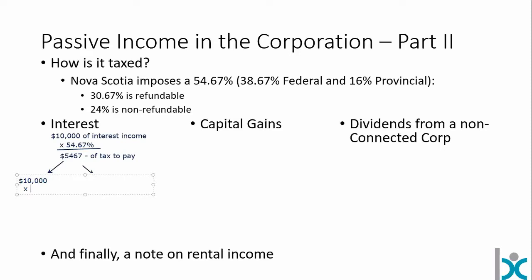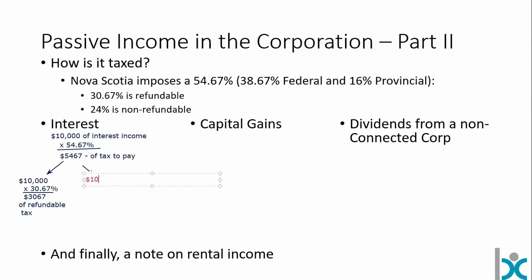What we really have is 30.67% — $3,067 of refundable tax. You're asking: how do I get the refundable tax back? I'll show you that in the next video. It's held by CRA and does not generate any interest or anything like that — CRA just sits on it until you do the thing you have to do to get that refundable tax refunded. And then you have 24%, what I'll call real tax — $2,400 of real tax. This is money that's actually gone; you'll never get it back.